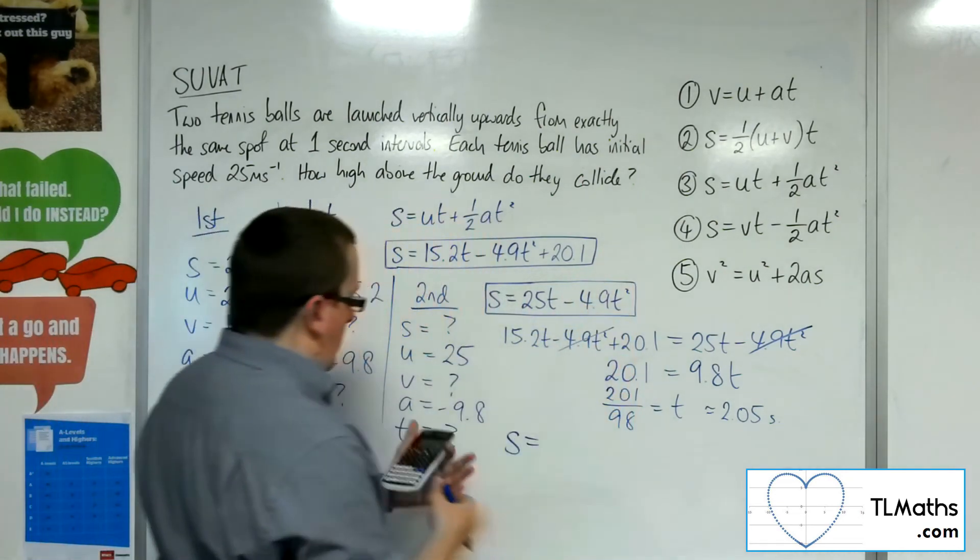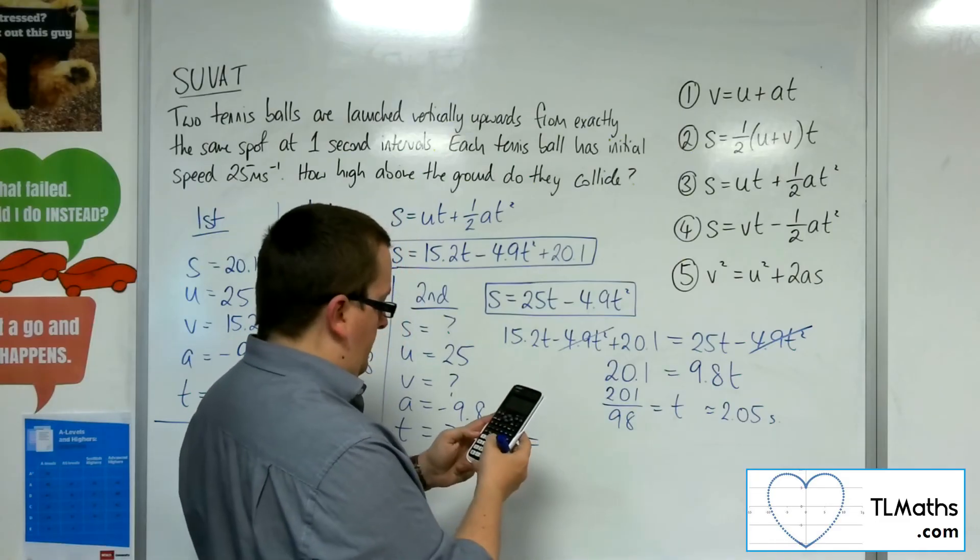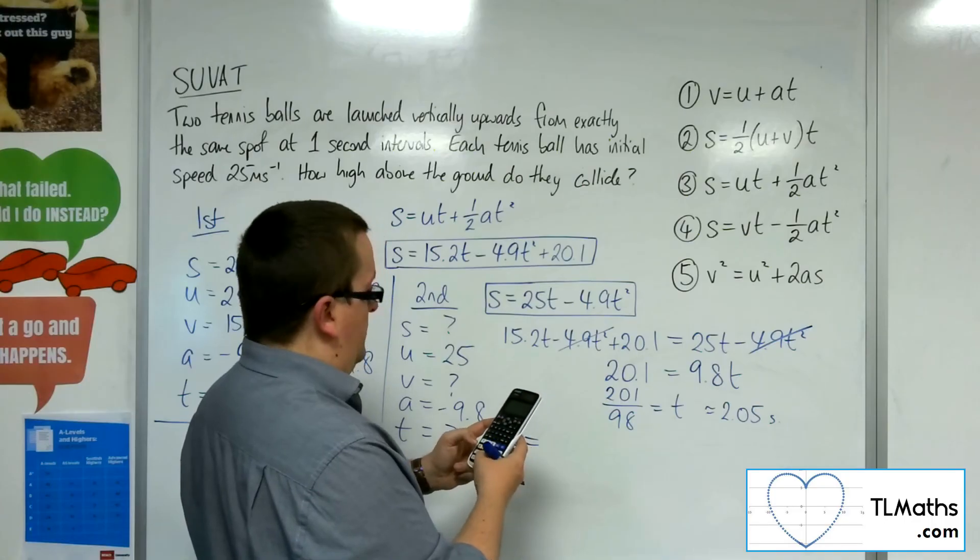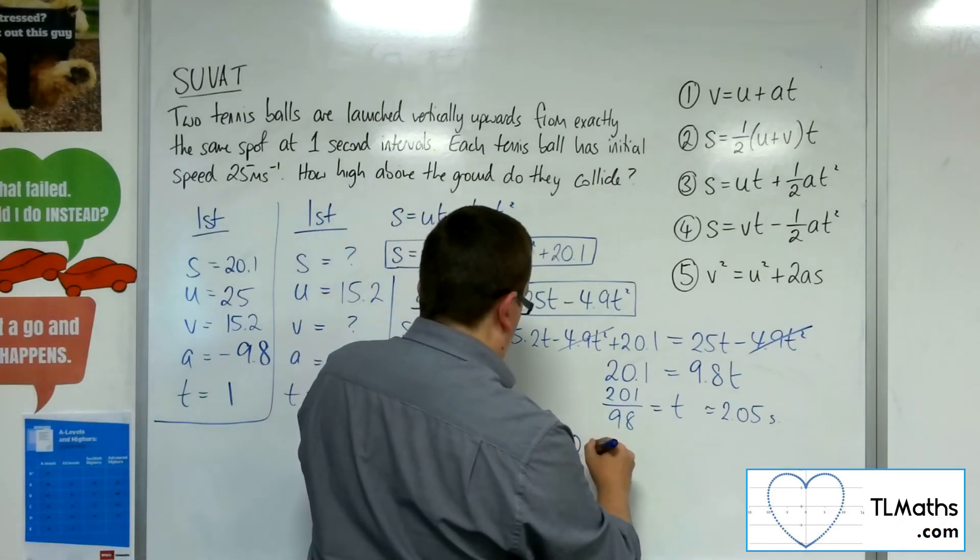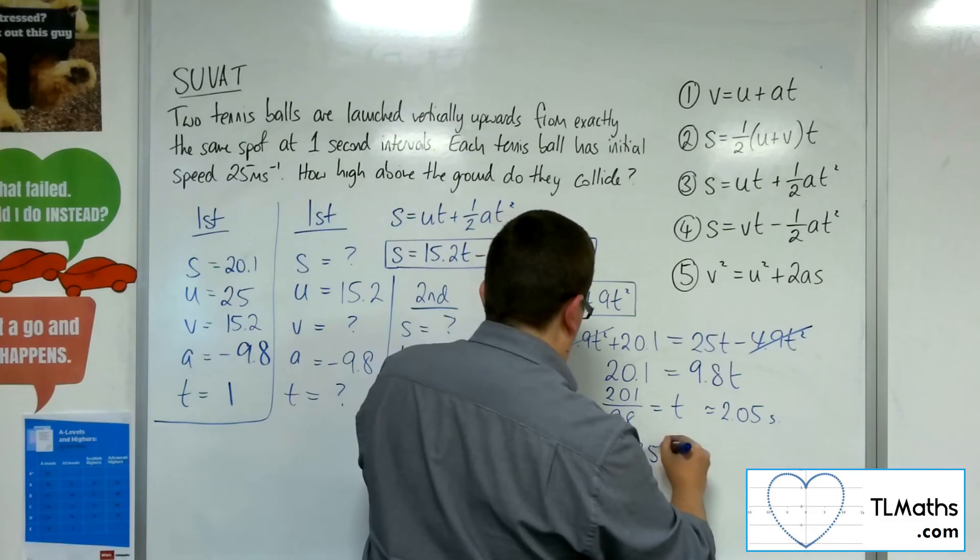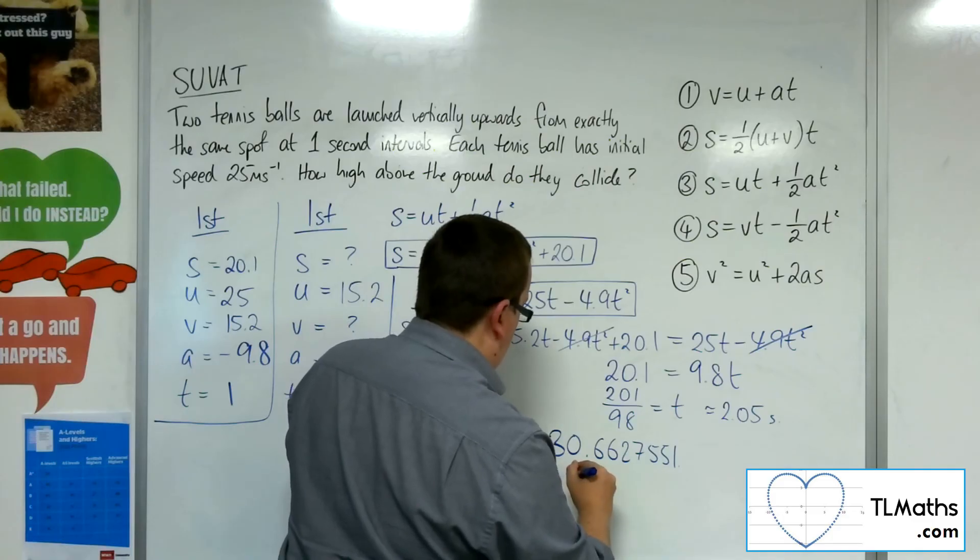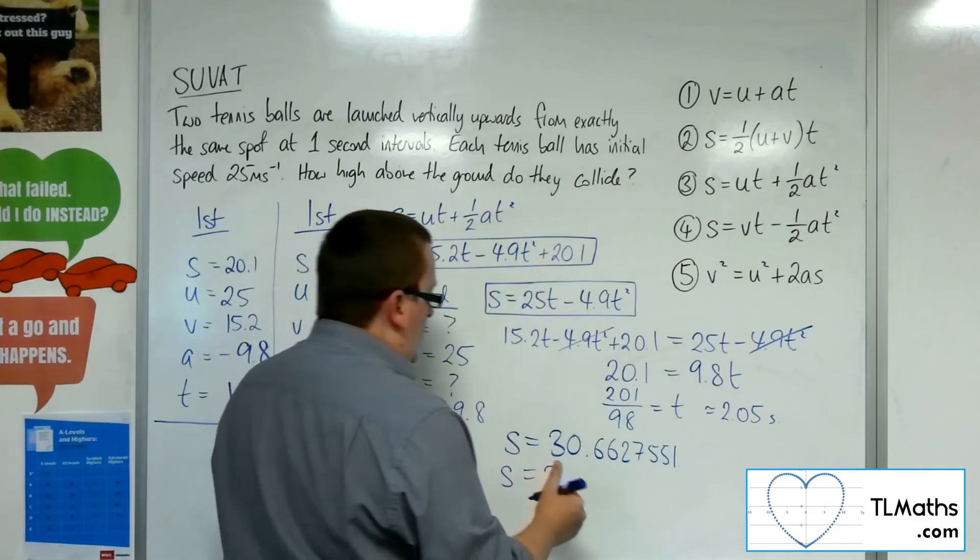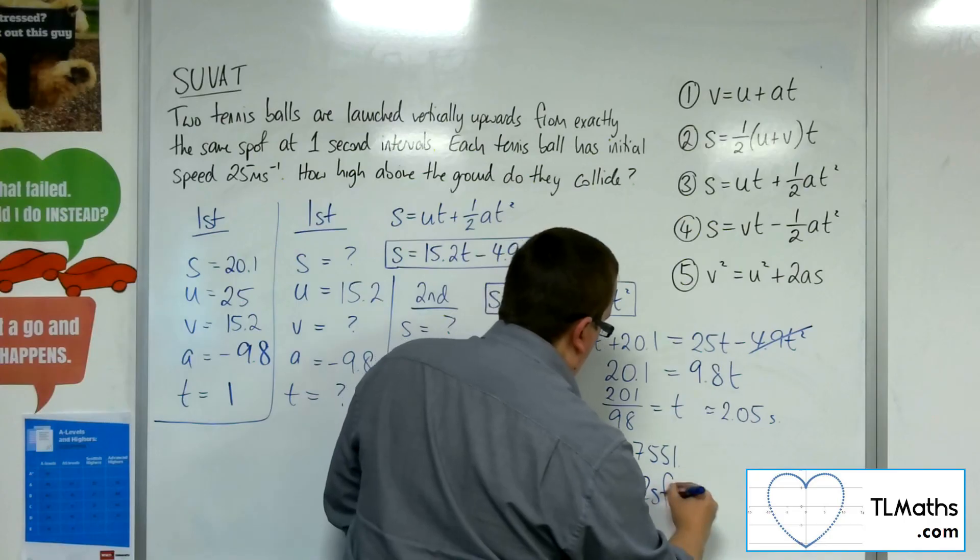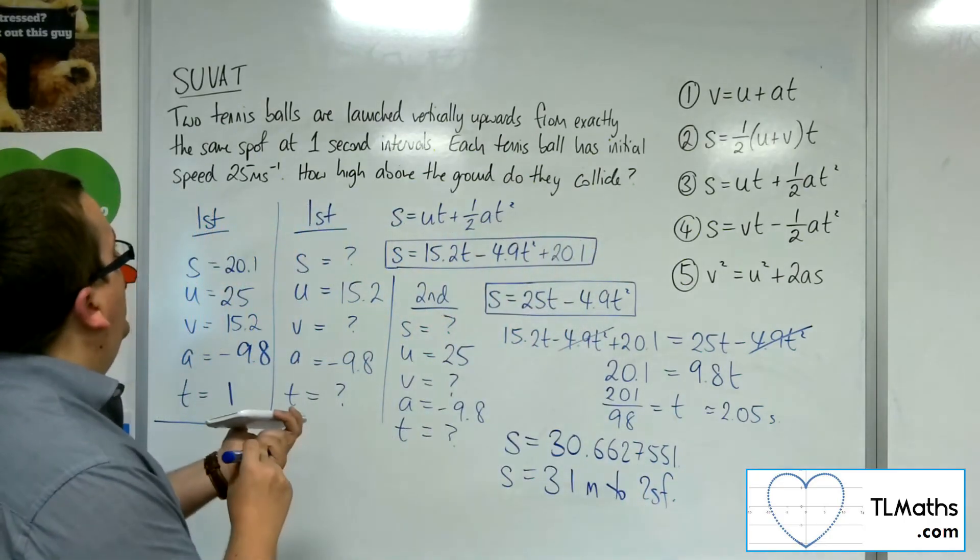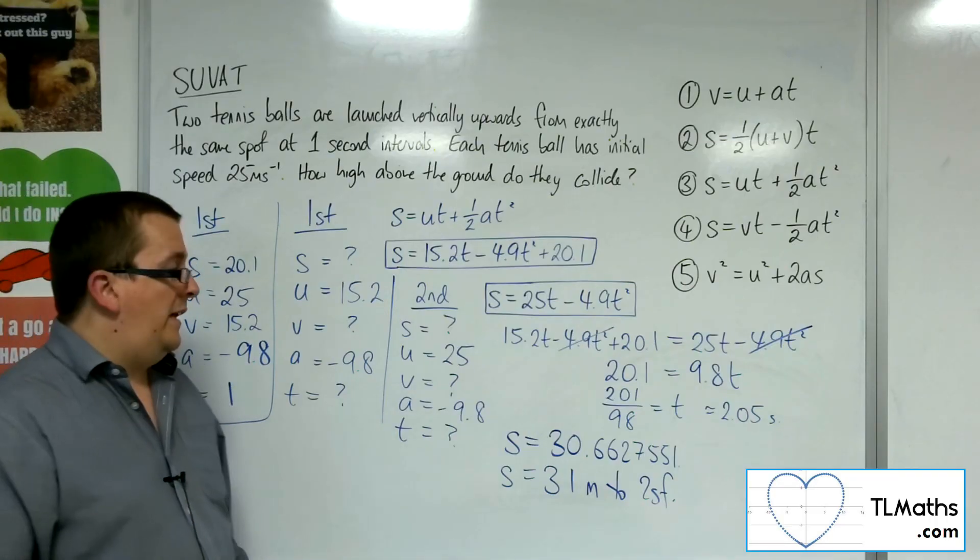And the displacement is relative to the origin, because I've incorporated the 20.1 there in that equation. So if I substitute into this equation, for example, we've got 25 times the 201 over 98 take away 4.9 times the 201 over 98 squared, and I get 30.6627551. So S equals 30... well, seeing as we're using 9.8, this should be rounded to two significant figures. So 31 metres to two significant figures. That is how high above the ground the two particles collide.